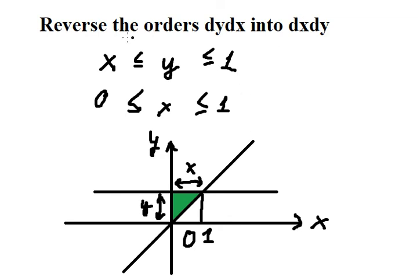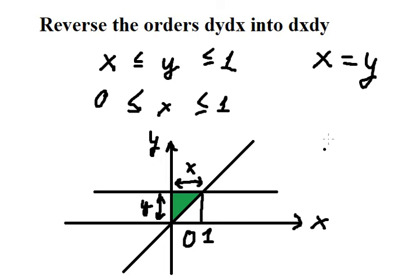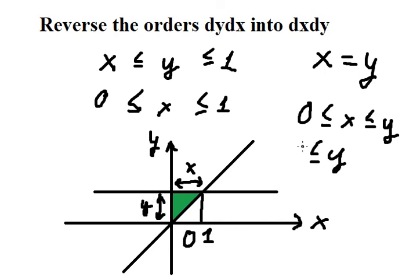Because we reverse the orders, we need to find the new bounds for dx. About x, we have x equals y as one bound, and x is greater than or equal to 0. So the bounds for dx are: 0 is less than or equal to x, and x is less than or equal to y. About y, y is greater than or equal to 0 and less than or equal to 1.